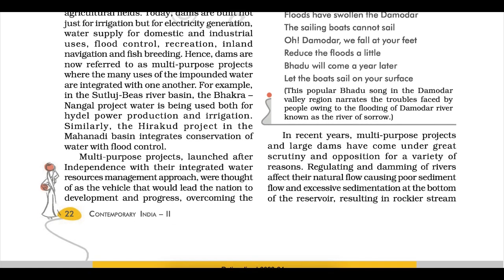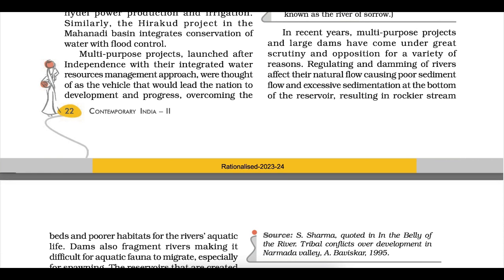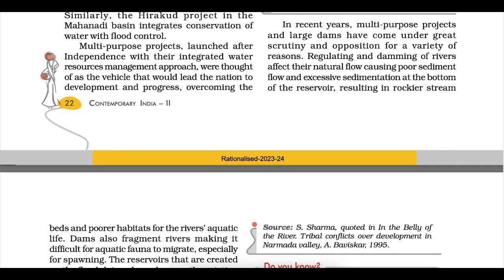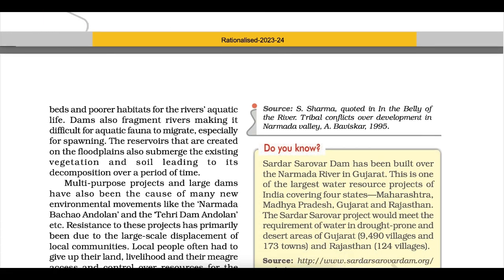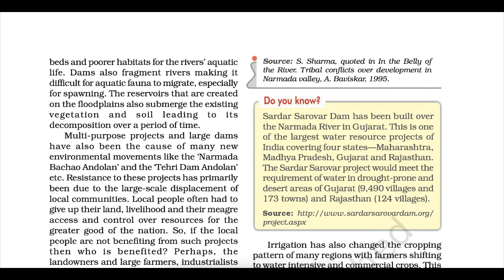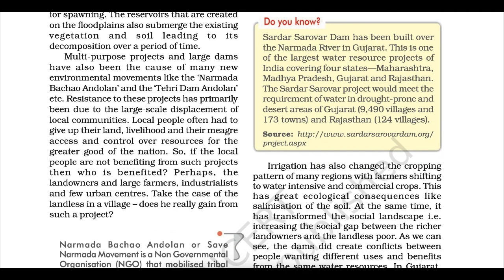In recent years, multi-purpose projects and large dams have come under great scrutiny and opposition. Regulating and damming of rivers affects their natural flow, causing poor sediment flow and excessive sedimentation at the bottom of reservoirs, resulting in rockier streambeds and poorer habitats for aquatic life. Dams also fragment rivers, making it difficult for aquatic fauna to migrate, especially for spawning. The reservoirs submerge existing vegetation and soil, leading to decomposition over time.